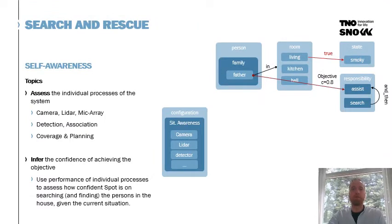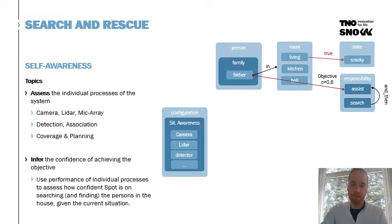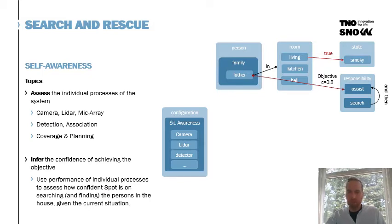The other topic is self-awareness, which means that Spot is able to understand how capable it is of executing either the search task or an assistance task. We do that by assessing the individual processes and components on Spot — the camera, LiDAR, detector, and software routines. For each of those modules, we will do a technical assessment, and based on that we infer how confident Spot can be in achieving its objective — in this case, searching and assisting Father with a confidence of 0.8.